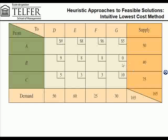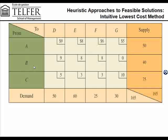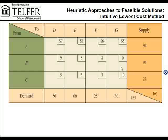In this example, we actually have a cell with a cost of zero — that is from supply point B to demand point G. The cost of transportation between those two points is $0. This might be a scenario where a warehouse location also acts as a retail outlet, making transportation cost very low or zero. So we are going to fill out that cell first, allocating the maximum number of units to it.